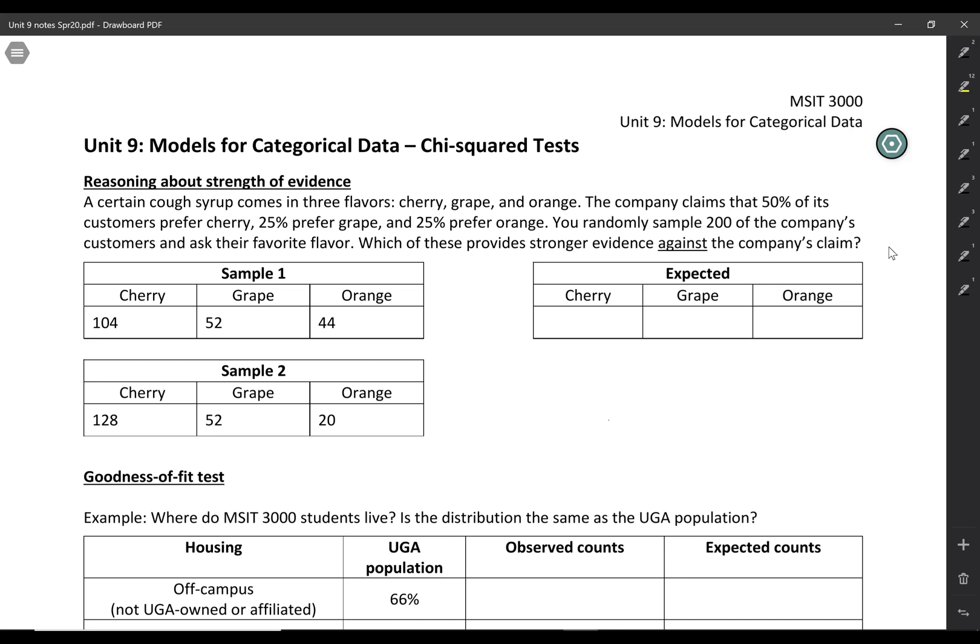A cough syrup comes in three flavors, cherry, grape, and orange, and the company claims that 50% of its customers prefer cherry, 25% prefer grape, and 25% prefer orange. We randomly sampled 200 of the customers and asked their favorite flavor, and I have two different samples that you could get in this scenario.